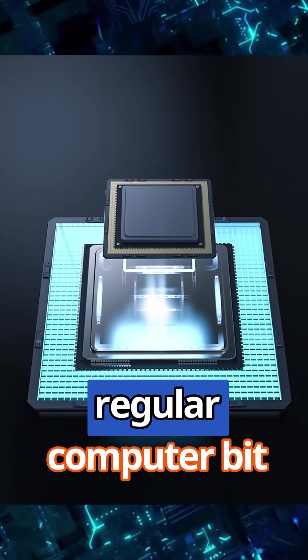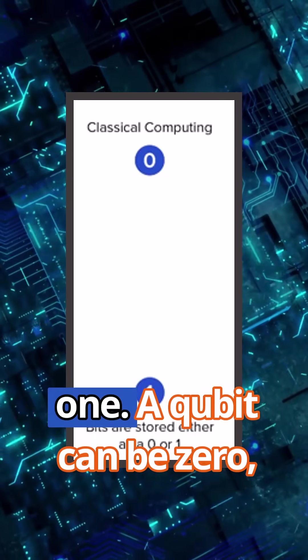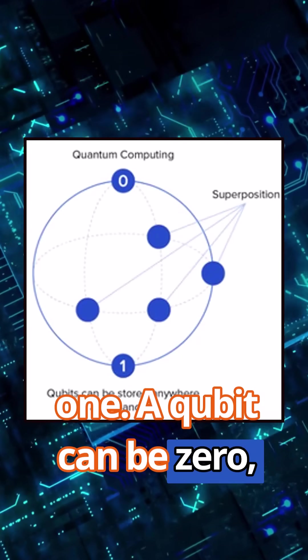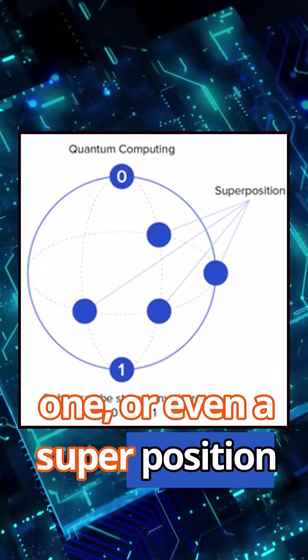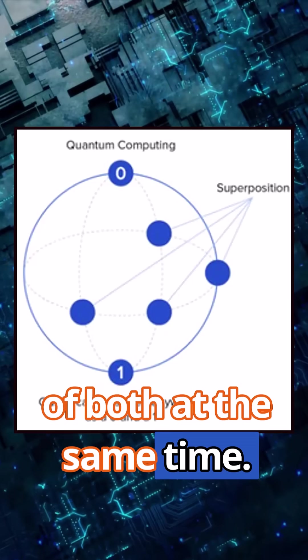Unlike a regular computer bit that can only be a 0 or a 1, a qubit can be 0, 1, or even a superposition of both at the same time.